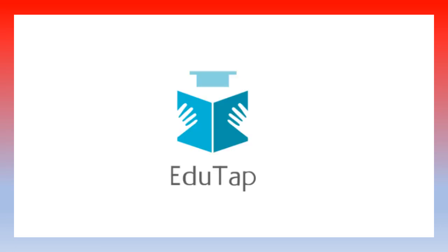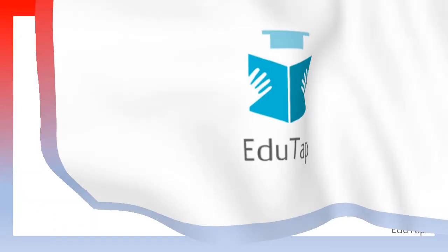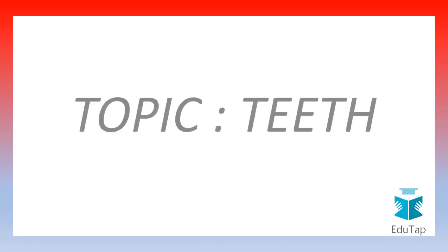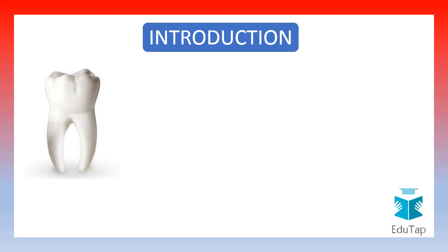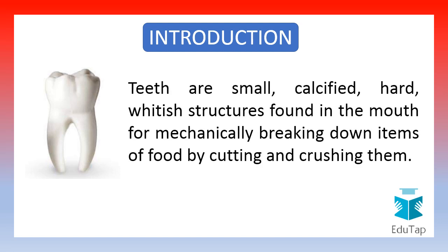Hello friends, welcome to Agutap. Today we will be discussing an important topic of science: teeth. Teeth are small calcified hard whitish structures found in our mouth. They are used to mechanically break down food items by cutting and crushing them. Cutting and crushing of food is necessary for the easy digestion and absorption of food inside our body. Calcified means that they are made up of calcium.